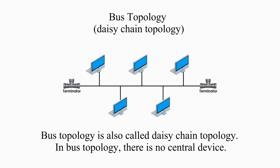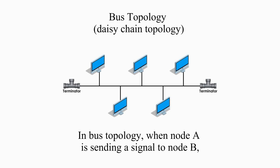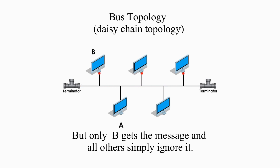Bus topology is also called daisy-chain topology. In bus topology, there is no central device. Every network node is attached to one shared bus cable. When node A is sending a signal to node B, the signal goes to the bus and every node attached to the bus gets a copy, but only B gets the message, and all others simply ignore it.